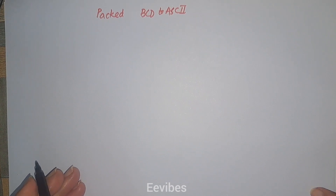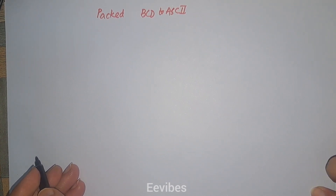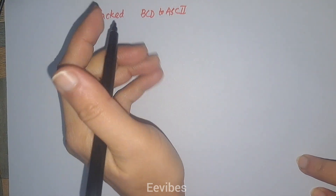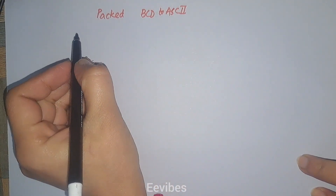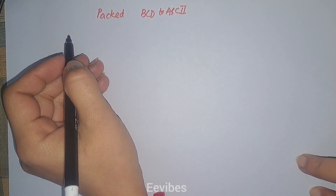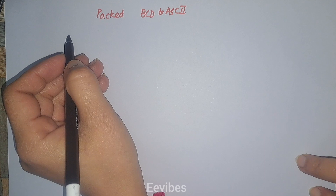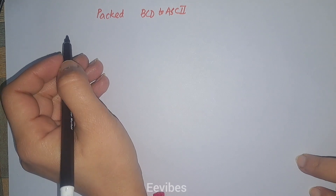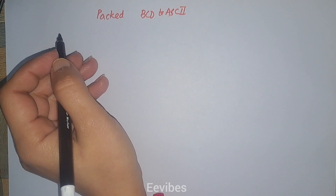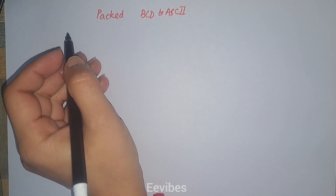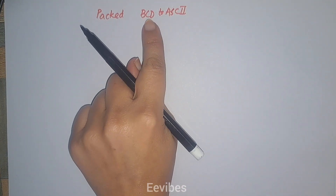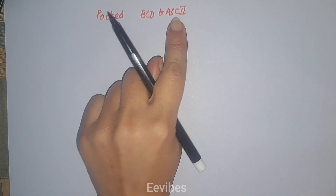Assalamu alaikum, this is Asma Mushtaq from Double E Wipes. In this tutorial I am going to explain how to perform the packed BCD to ASCII conversion and why we need to perform this conversion, because all the information that is represented digitally needs to be converted first into ASCII. That's why, in order to see clock timings, date displays, any digital information, or for printing purposes, the data must be in ASCII.